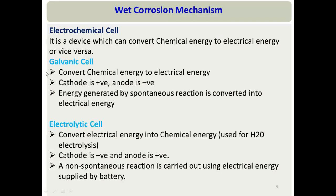...and an electrolytic cell, where electrical energy is provided to carry out a non-spontaneous chemical reaction — like electrolysis of water to generate hydrogen. Corrosion usually occurs by the galvanic cell mechanism, so we will focus on that.